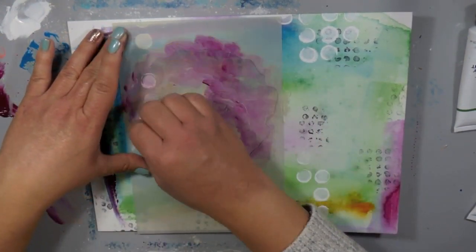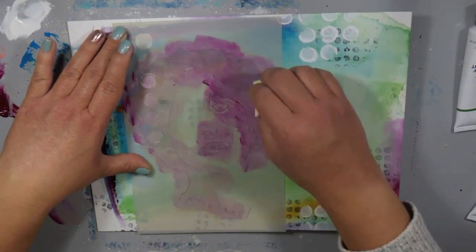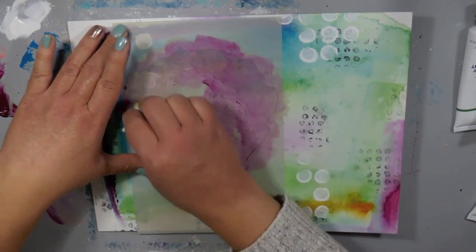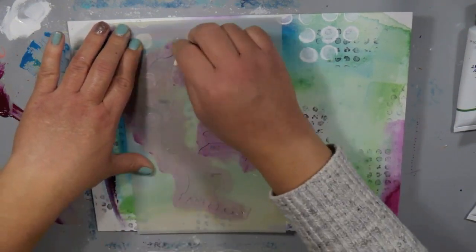I'm actually bringing in some of this fuchsia color and blending it with that gray Elephant color and just sponging on this stencil.